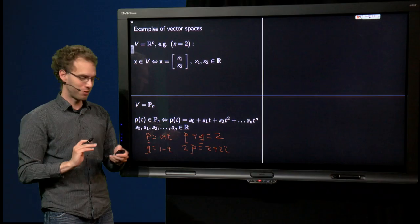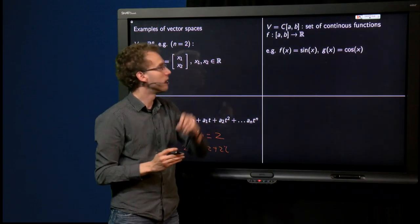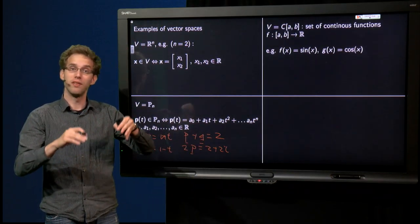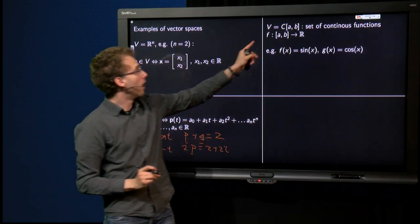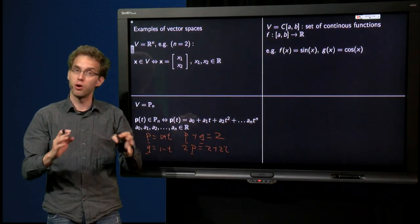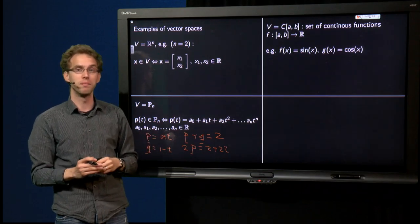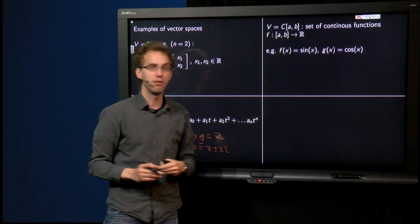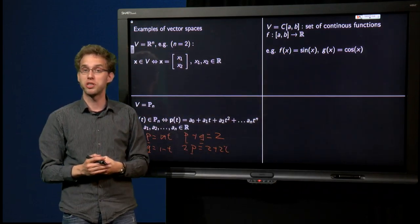We have more examples. V, the set of all continuous functions, with domain [a,b] to R. Codomain R, domain [a,b]. For example, functions f(x) equals sin(x) and g(x) equals cos(x).